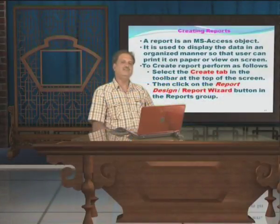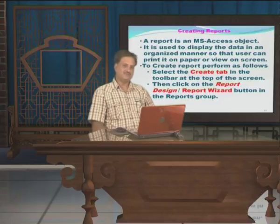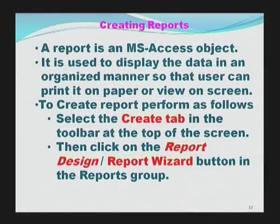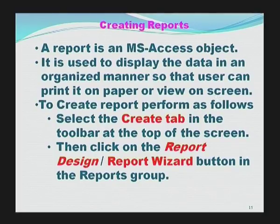Similarly, there is one another operation — reporting. Similar to query, we can easily create a report depending upon the corresponding database table. A report is an MS Access object — an object of the database management system. It is used to display data in an organized manner so that the user can print it on paper or view it on screen. The reports we see on paper are simply the output of the report operation.